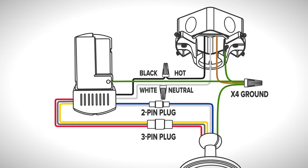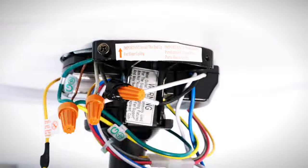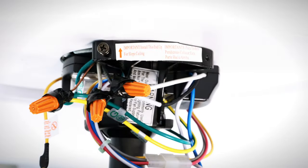If applicable, cap off any unused wires from the ceiling box. Wrap electrical tape around the connections to hold the wires in place.